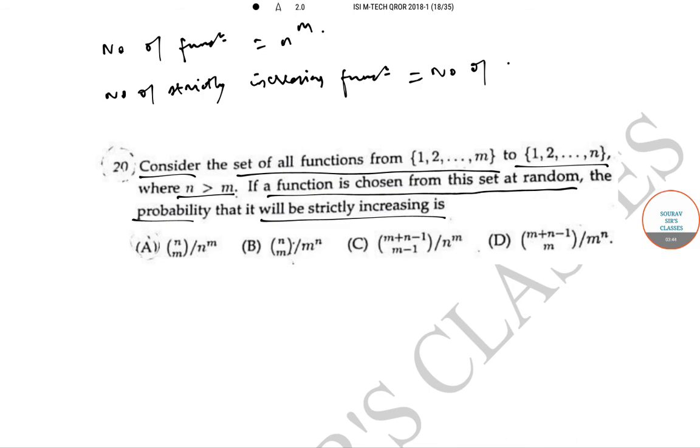Number of strictly increasing functions would be number of m distinct elements chosen in 1 to up to n which is equal to ncm.